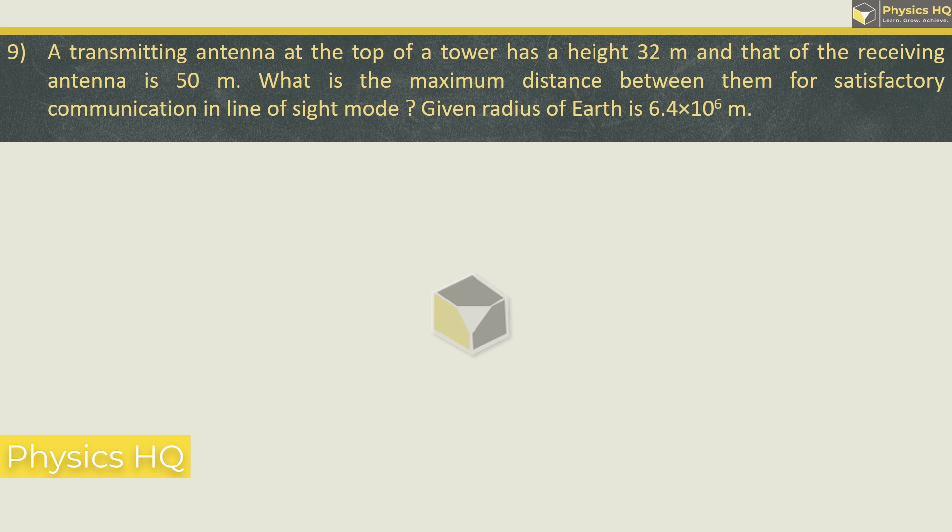Hope you all understood this. Next, a transmitting antenna at the top of a tower has a height of 32 meter and that of receiving antenna is 50 meter. What is the maximum distance between them to satisfactorily communicate in line of sight mode? So here we will have range of transmitting antenna and range of receiving antenna and we will add to get the total range. So range of transmitting antenna will be root of 2 times radius of earth times height of transmitting antenna. Similarly for receiving, root of 2 R times height of receiving antenna.